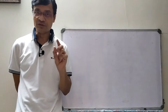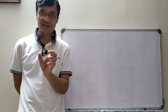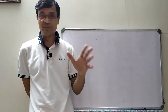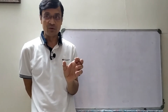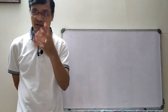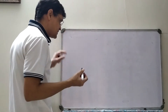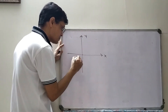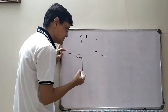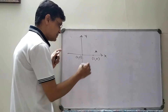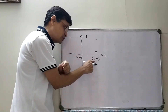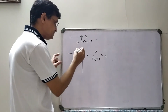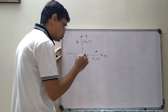In physics, the first concept is position. Position is a relative physical quantity. On a graph with X and Y axes and origin at (0,0), if particle A is at (2,0), it means X-distance is 2 units and Y-distance is 0. If particle B is at (0,2), X-distance is 0 and Y-distance is 2 units. Position C is at (2,2), meaning 2 units on X and 2 units on Y.